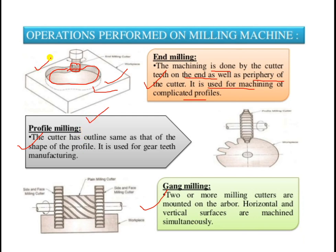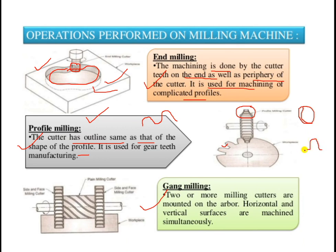Profile milling is performed on a plain surface having a polygonal shape such as square, hexagonal, rectangular, or triangular. If the surface is cylindrical and material needs to be removed in a certain profile — for example, a gear-like structure — the cutter has an outline the same as the shape of the profile. This milling cutter removes material from a circular disk called a gear blank to produce gear teeth. It is used for gear manufacturing.